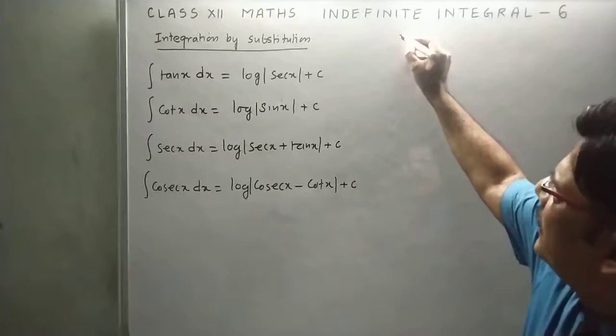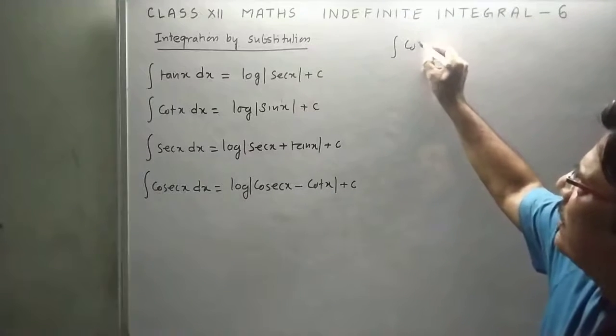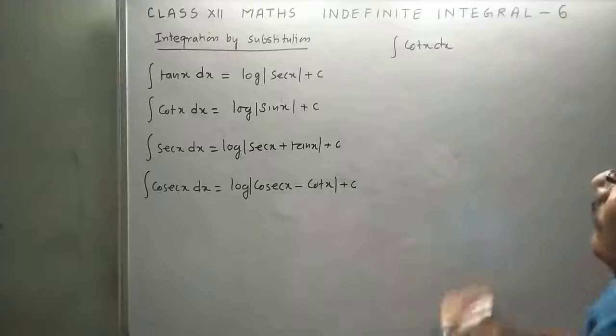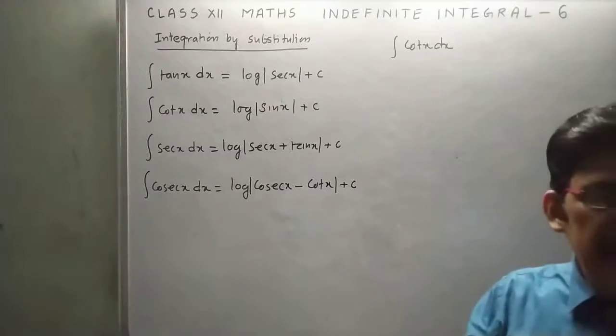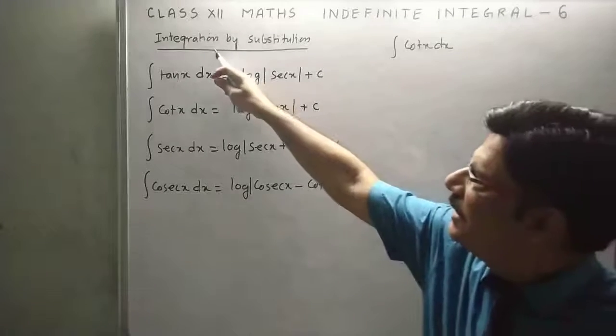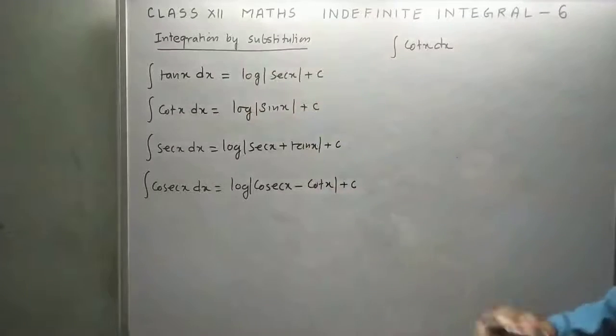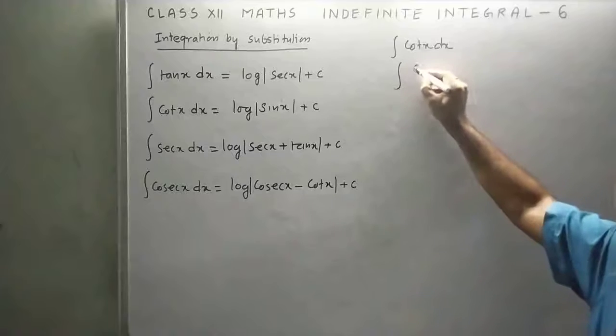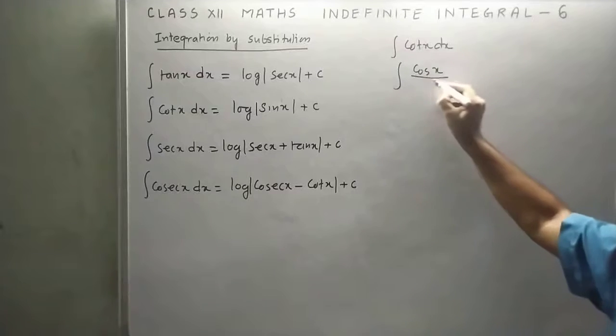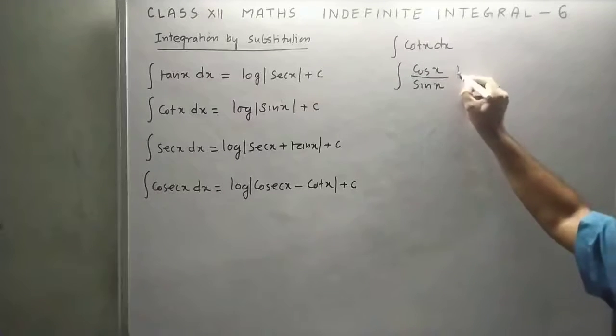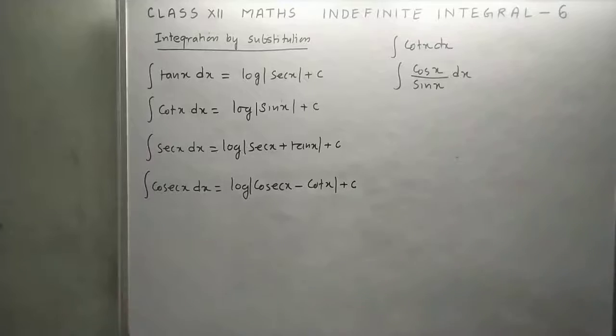We will prove the integration of cot x dx. To prove this, we use integration by substitution. First of all, replace cot x by cos x upon sin x. Now suppose a function as t whose derivative is given at the numerator.